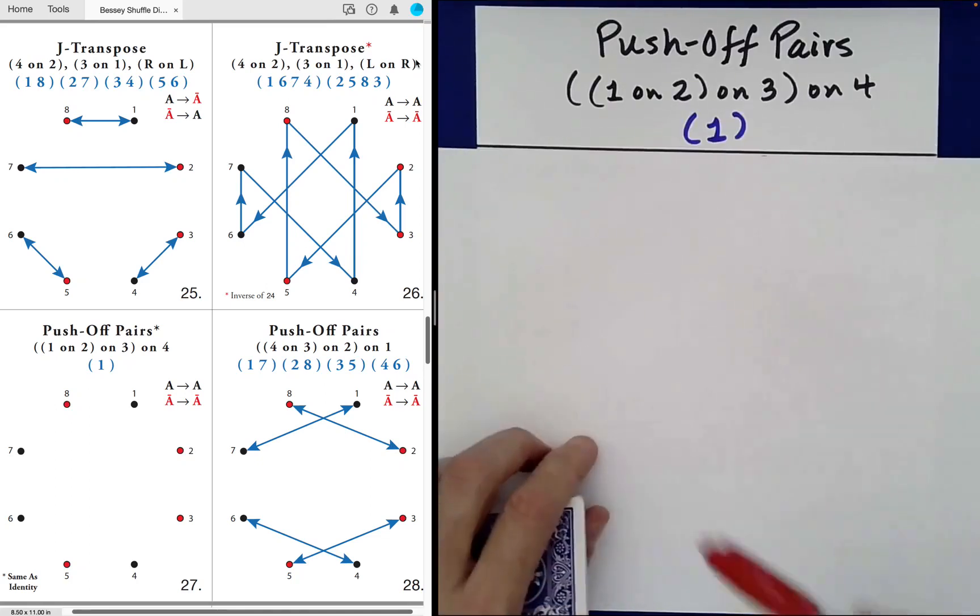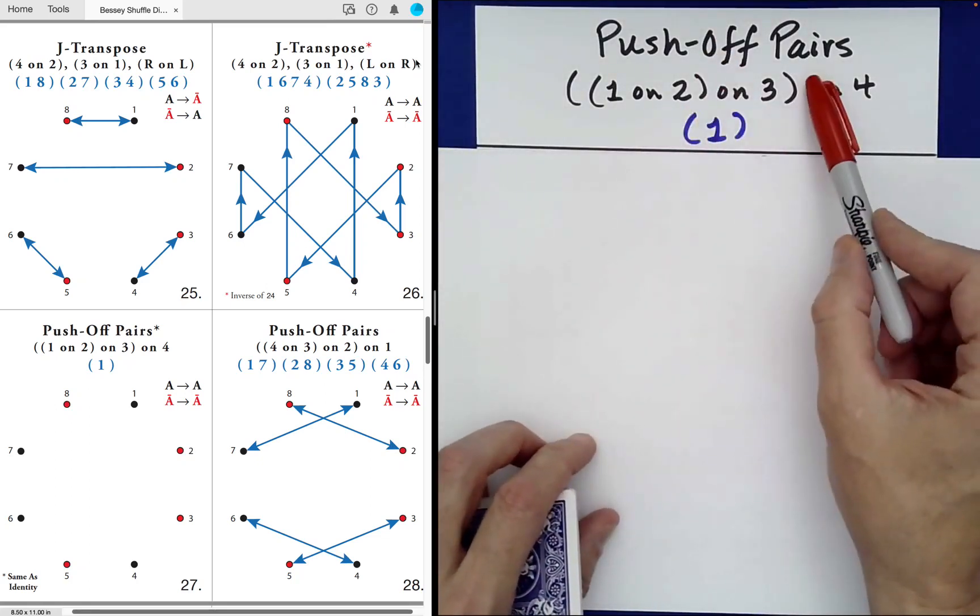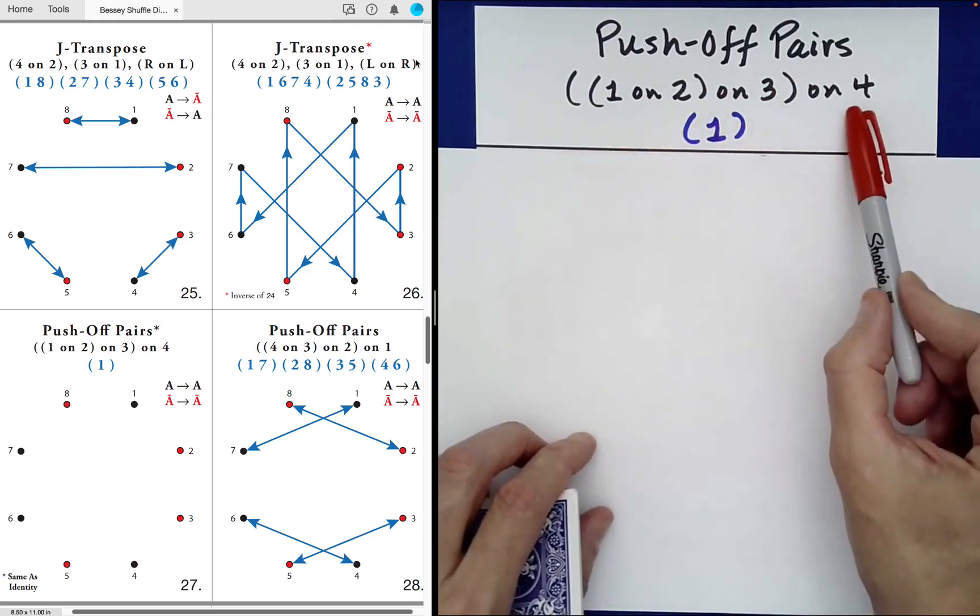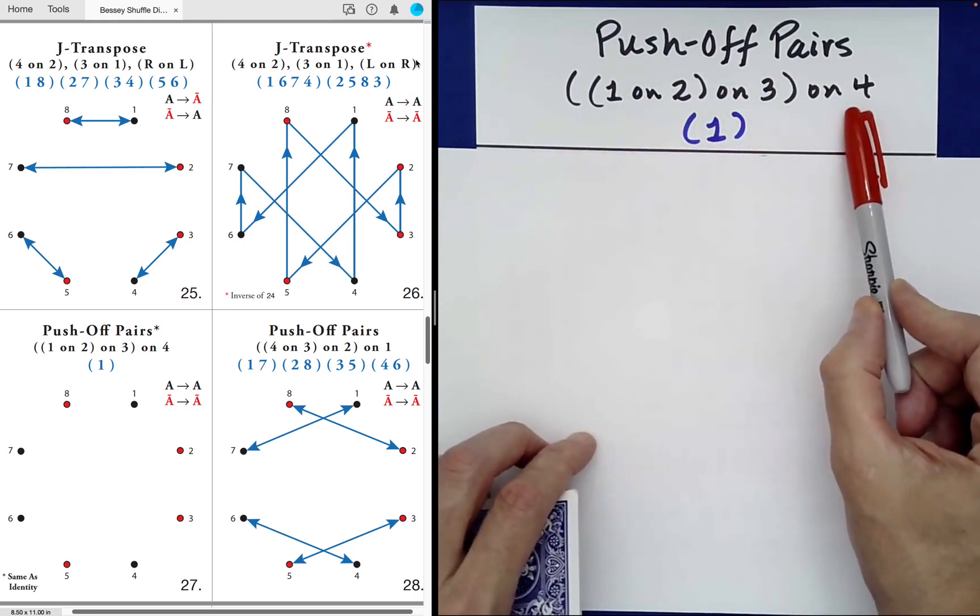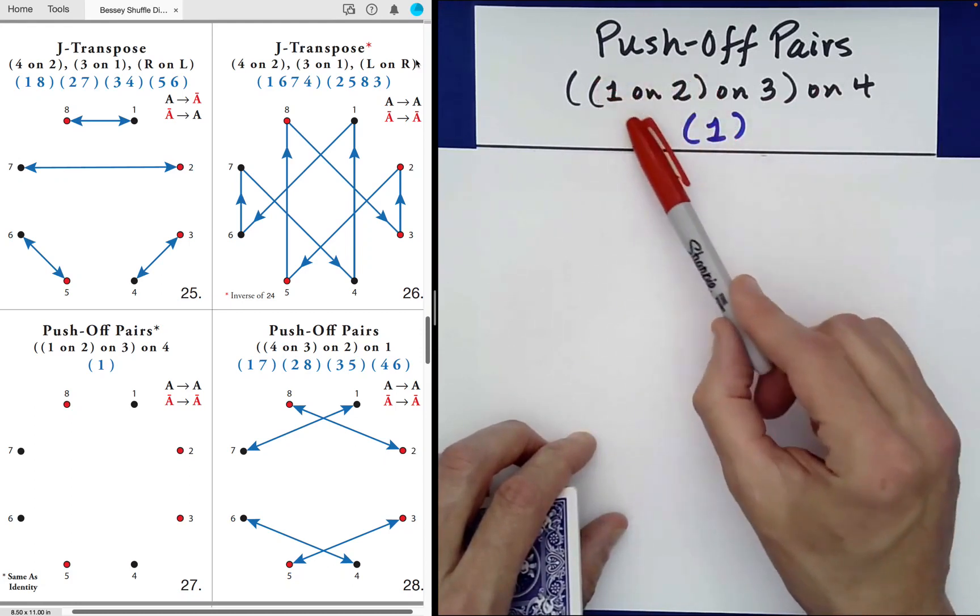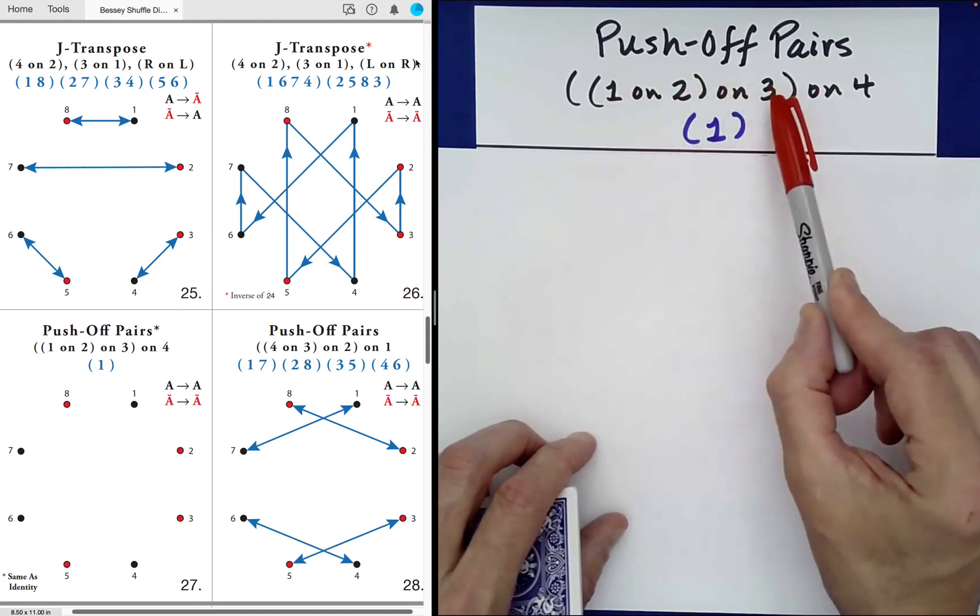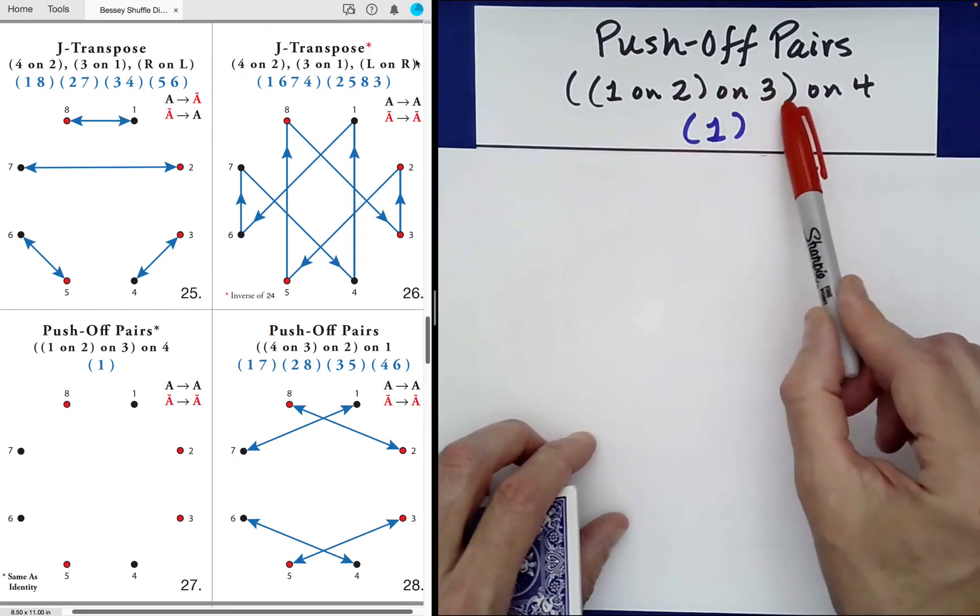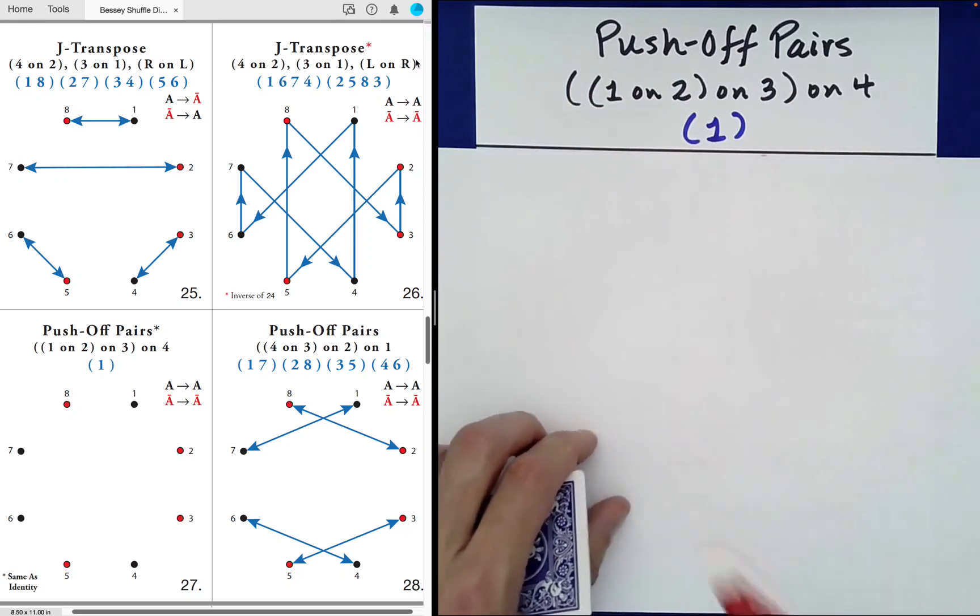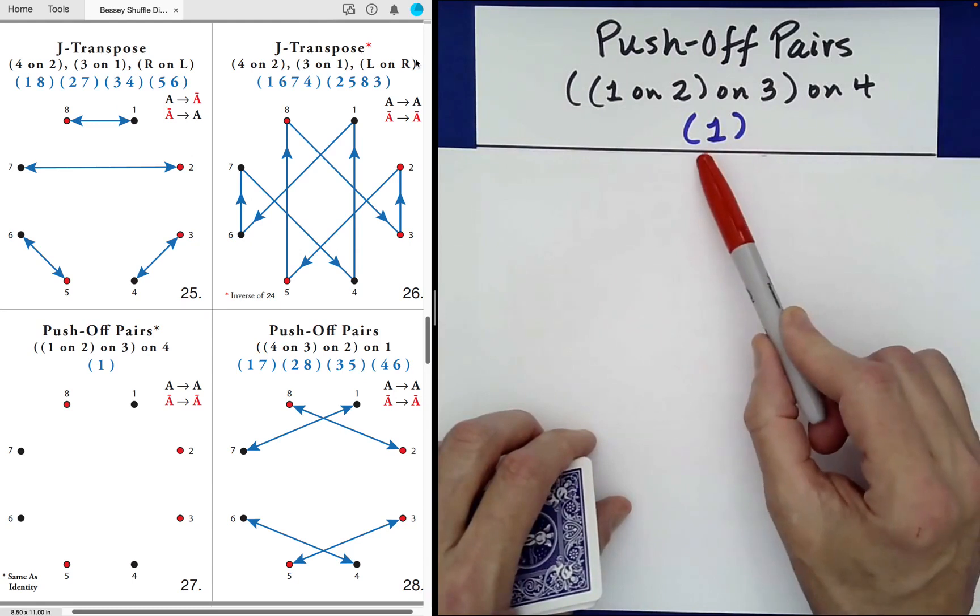Our next shuffle is called push-off pairs, and we can interpret the following as simply describing a stacking of those pairs from left to right. Because the first pile gets stacked on top of the second, that set of four cards gets stacked on top of pile three, that set of six cards gets set on top of pile four. So we're just stacking from left to right, and something very important happens.